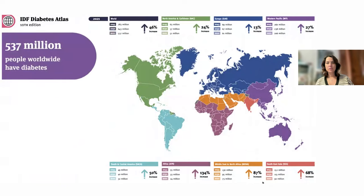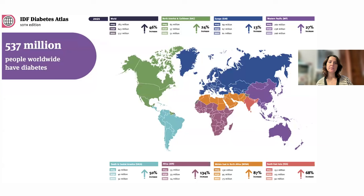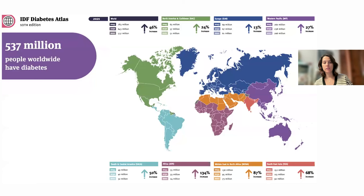The first thing we have to remember is that diabetes is currently a problem worldwide — it's increasing in prevalence year after year. With the 10th edition of the IDF Diabetic Atlas, they have even increased the prediction numbers for diabetic patients in 2045. Right now, we have about 537 million people worldwide with diabetes. This is going to keep increasing, but the rate differs by region. Europe is expected to increase about 13% in the next 20 to 25 years, while Africa is expected to increase about 134%.